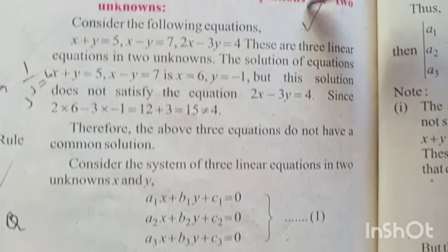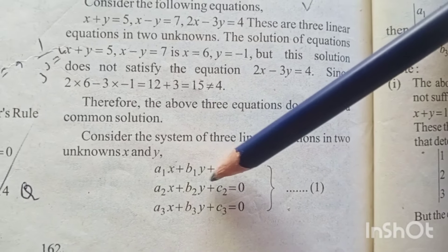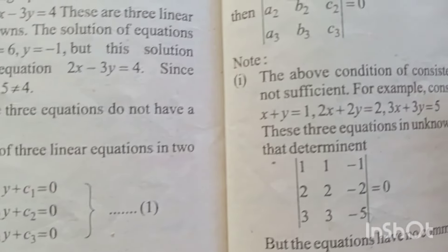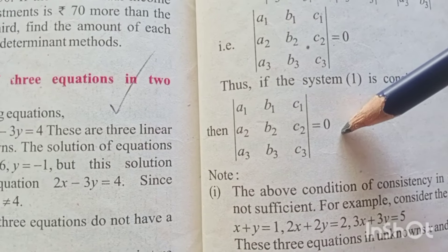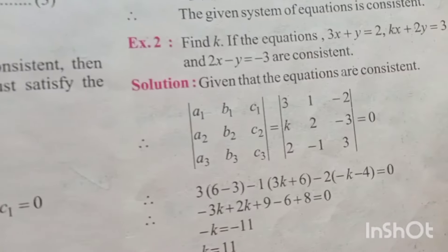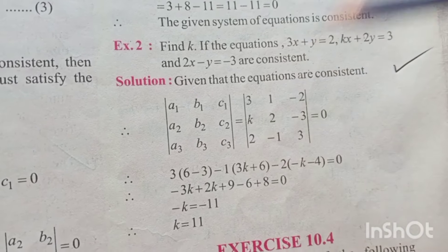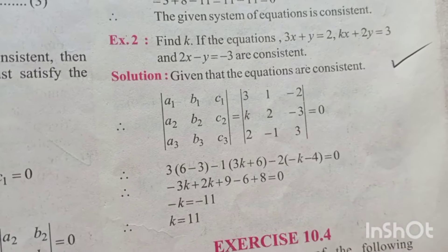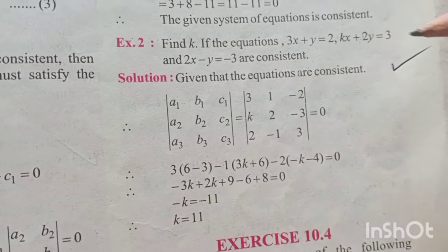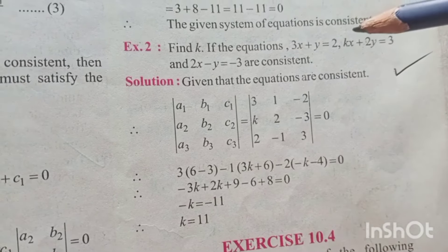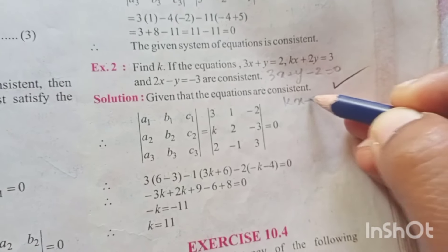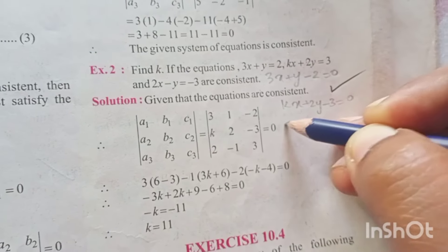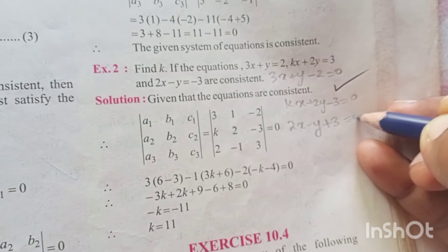Now consistency of equations. If there are equations and you need to know whether they are consistent. Here it is a two variable equation and three equations are given. So determinant of a1, a2, a3, b1, b2, b3, c1, c2, c3 will be 0. Now you need to understand that in that formula the c1, c2 and c3 were on the left hand side of the equation not on the right hand side. So you have to rearrange the question given to you. The first one will become 3x plus y minus 2 equal to 0. You need to bring the constant to the left side. Next equation will become kx plus 2y minus 3 equal to 0 and then 2x minus y plus 3 equal to 0. So this is the equation.